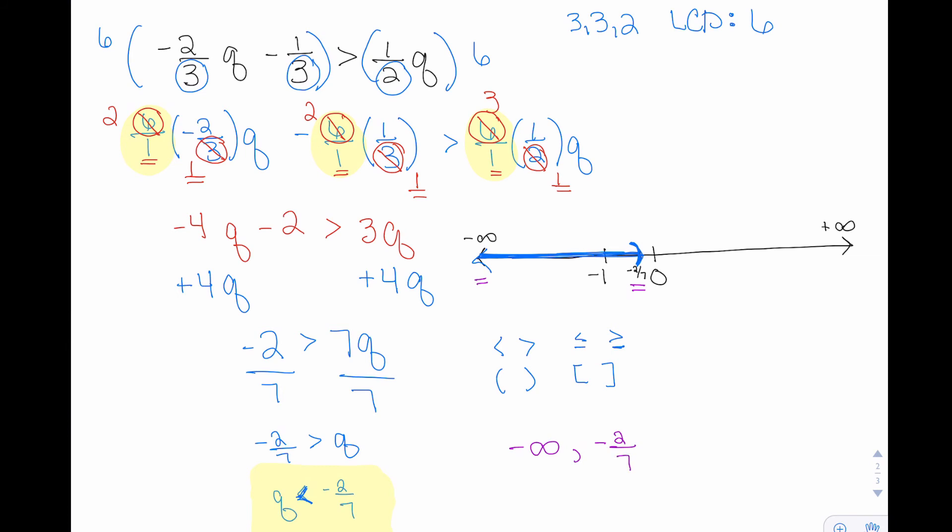For infinity, it's always a parenthesis, so I'll put a parenthesis on the left. If I check for negative two over seven, that was also a parenthesis. So now we have our graphical solution as well as our interval notation solution.